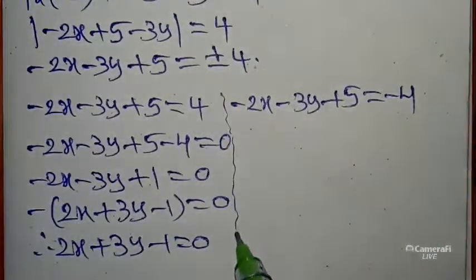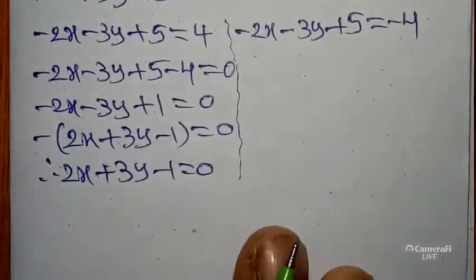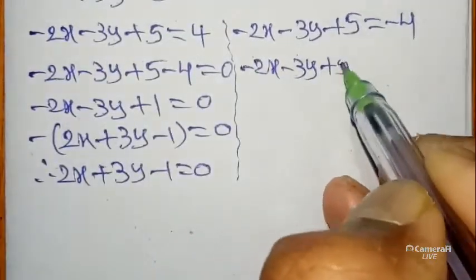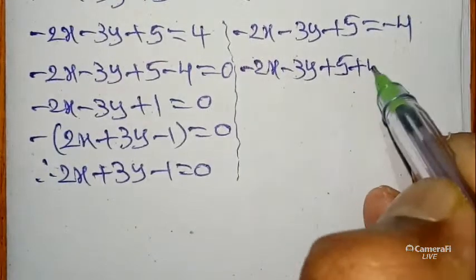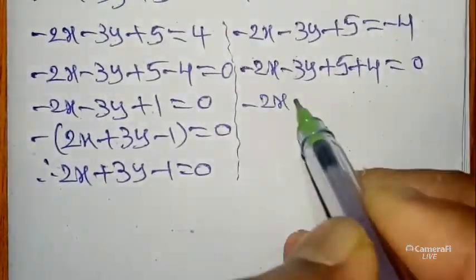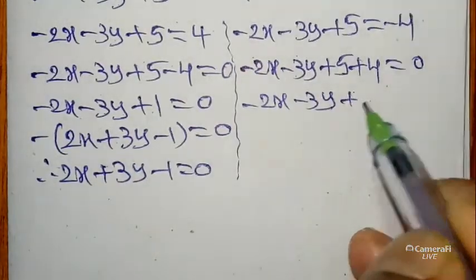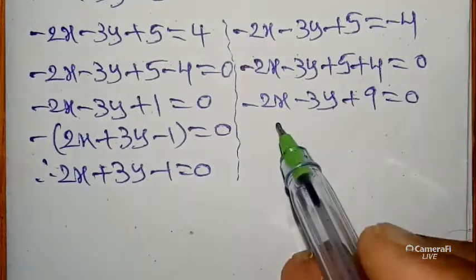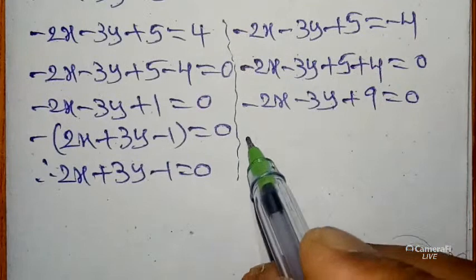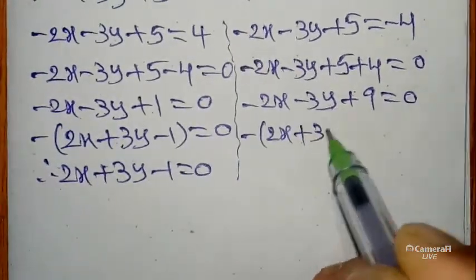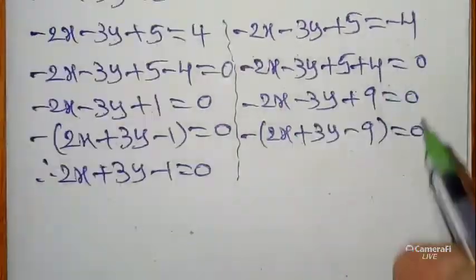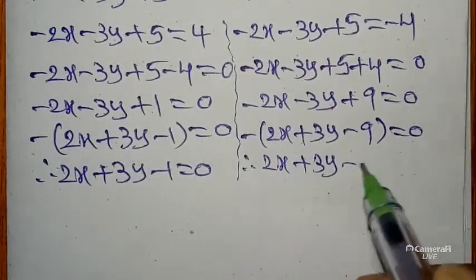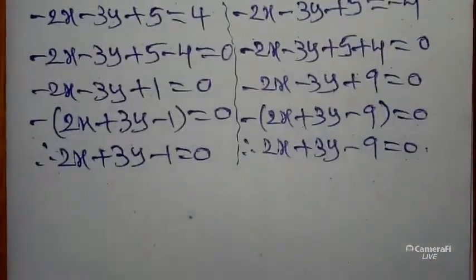Coming to the second part: -2x - 3y + 5, this equals... -2x - 3y + 9 equals 0. Here x coefficient is negative, so take -1. We get -1(2x + 3y - 9) = 0. Minus coming to right side, we get 2x + 3y - 9 = 0.